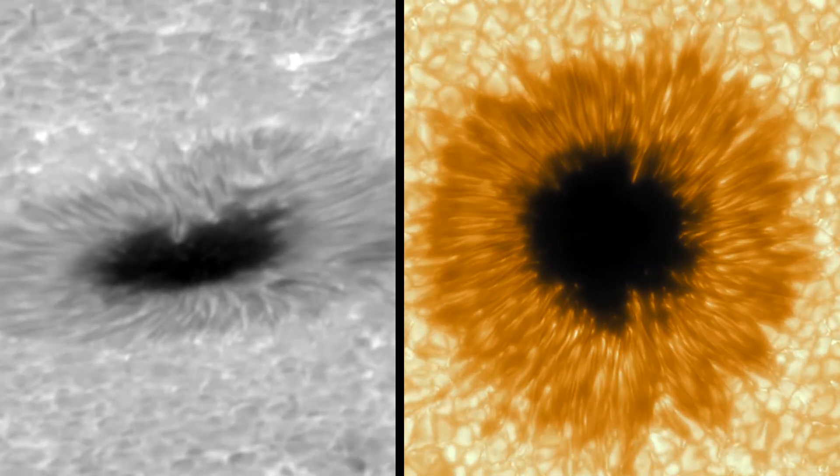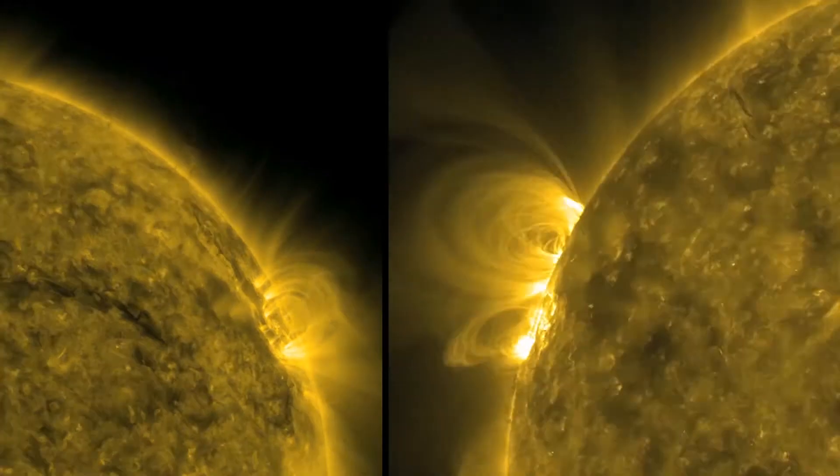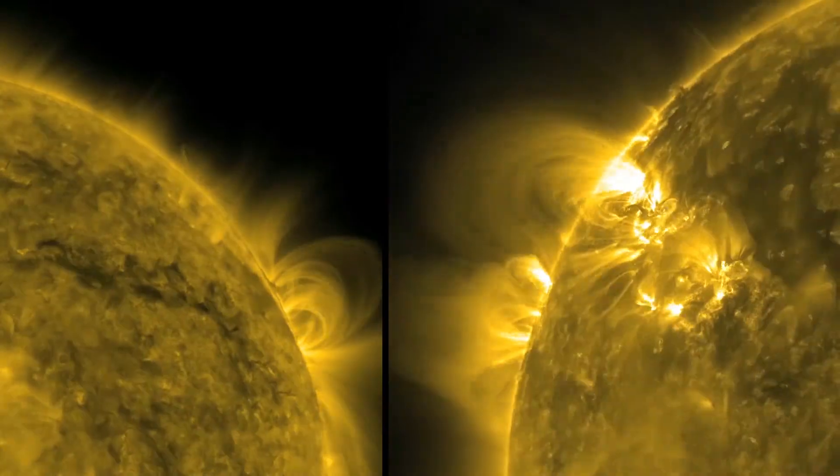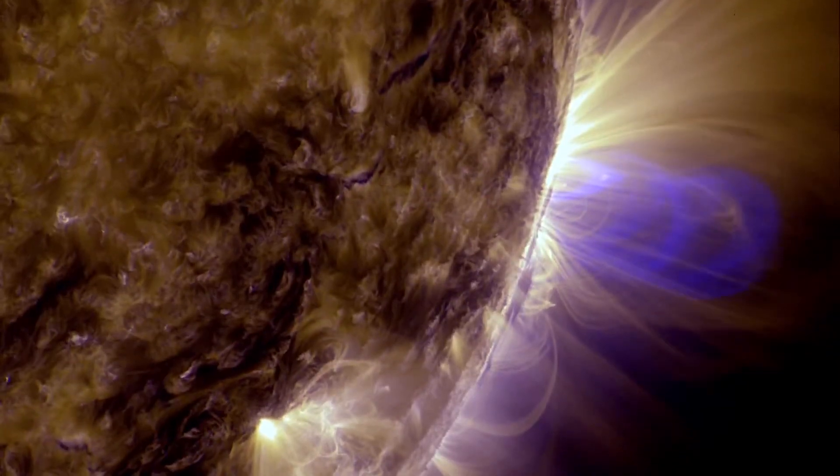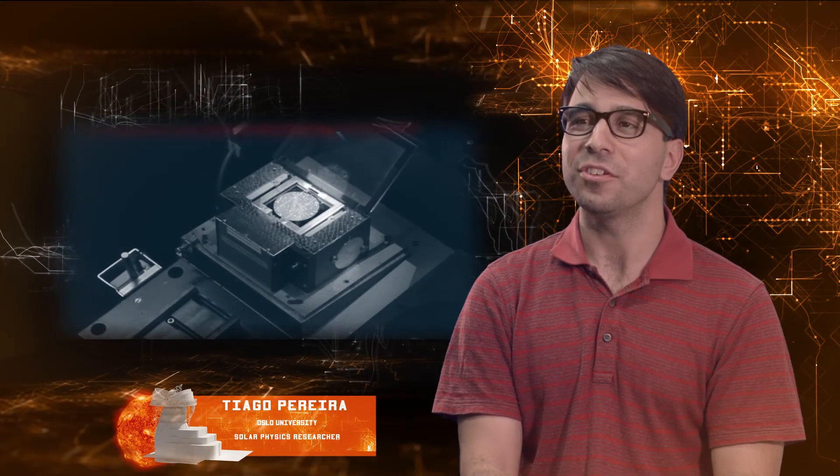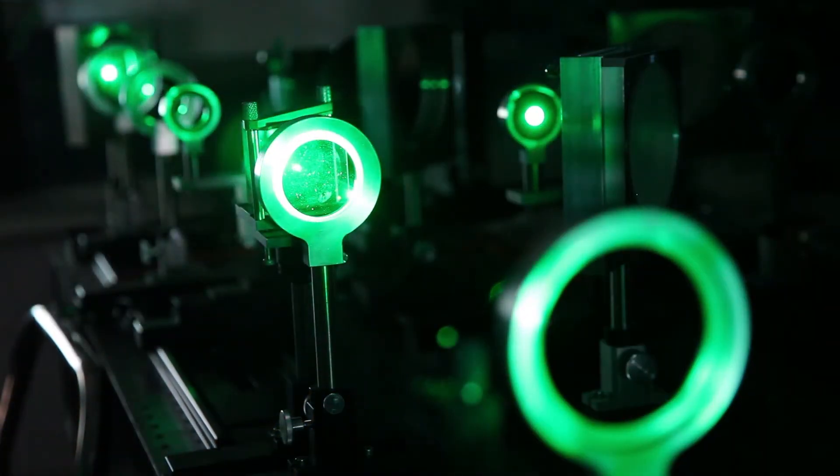With the EST, we can not only see details of the surface of the Sun of a few kilometers, but we can also analyze the most imperceptible trace of magnetic fields in the polarization of light. It is a real technological challenge, but also a unique opportunity for European industry. The construction of the EST will allow us to acquire a high level of expertise in the development of technologies, with possible applications in areas well beyond astronomy.